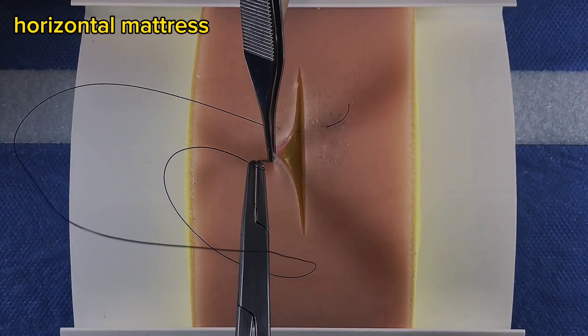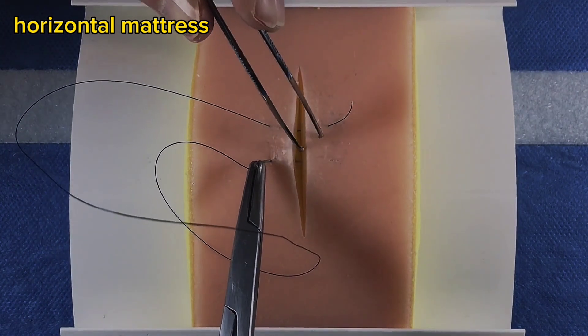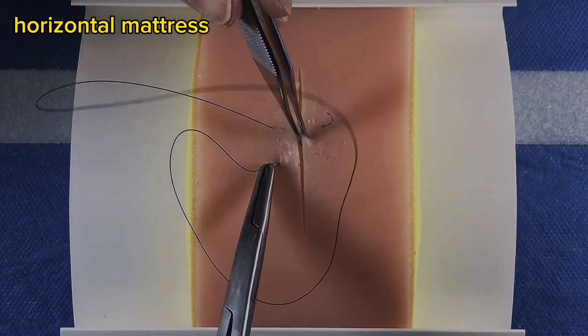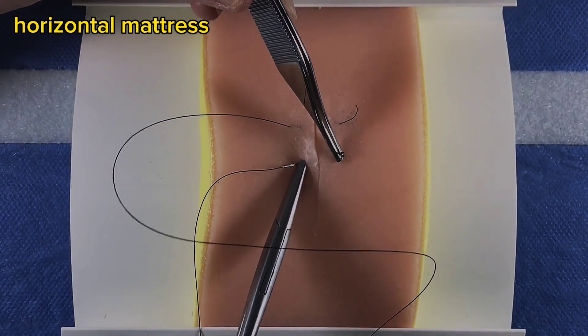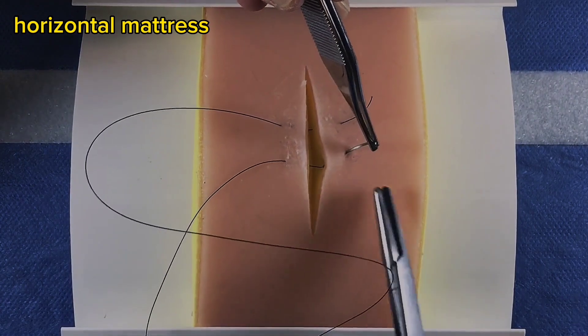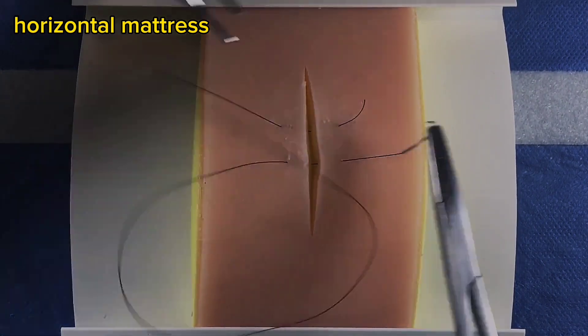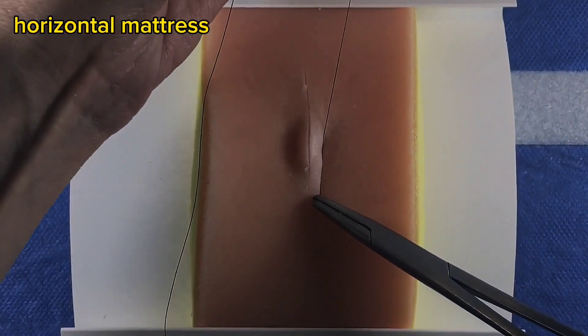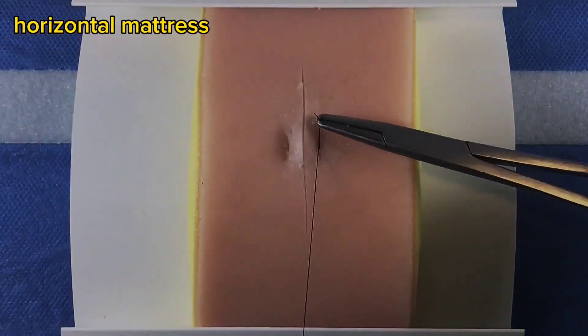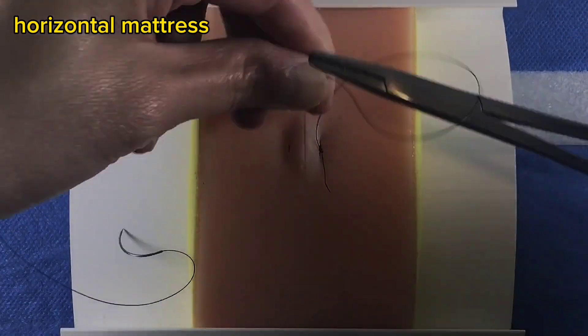Advance a distance of about one centimeter away from where the needle exited. At the same distance away from the wound edge and at the same depth as the first bite, drive the needle across back to the other side. Tie the suture strands together and cut.